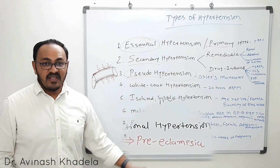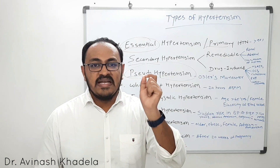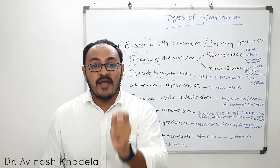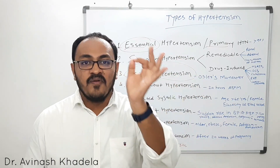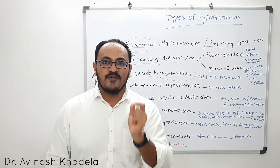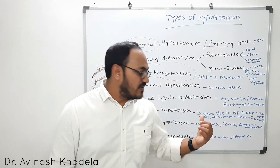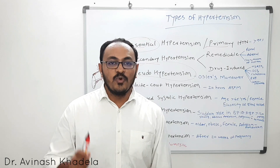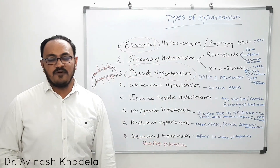If gestational hypertension is not treated, it converts to preeclampsia — a condition where blood pressure rises after 20 weeks of pregnancy along with proteinuria and edema in the lower limbs. This can lead to premature birth of the baby. Therefore, if a person is suffering from gestational hypertension, it is essential to treat it using anti-hypertensive drugs that are safe in pregnancy. This concludes the discussion on the different types of hypertension.